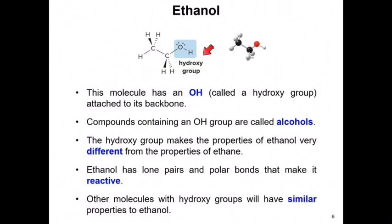Ethanol contains a hydroxy group, which makes it an alcohol. Alcohols like butanol, propanol, methanol, and isopropyl alcohol all contain this hydroxy group. Other organic molecules with the same hydroxy functional group will have similar properties to ethanol — for example, they can form hydrogen bonds with other molecules and with water. These alcohols are all polar molecules, and so they are miscible with one another and can mix with water because of their hydroxy groups capable of forming hydrogen bonds.